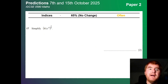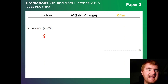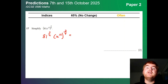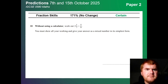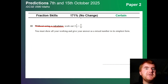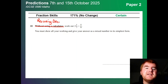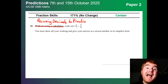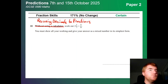Indices — no change at 65%. These are usually two-mark questions. Remember the index applies to both parts separately, so make sure you're doing 81 to the power of three-quarters as well as the letter. Fraction skills — no change at 171%. This is now exclusively a Paper 2 question. It also includes recurring decimals to fractions, which brings the frequency up towards 200%.